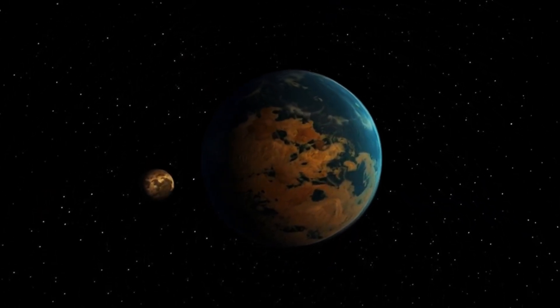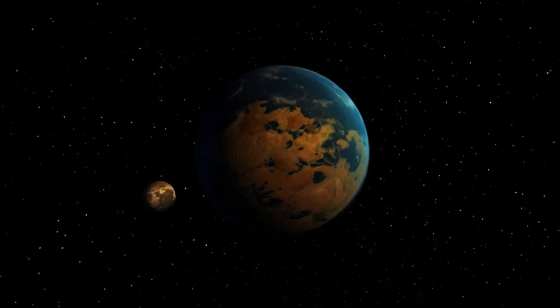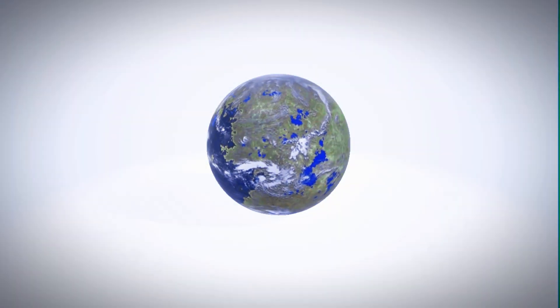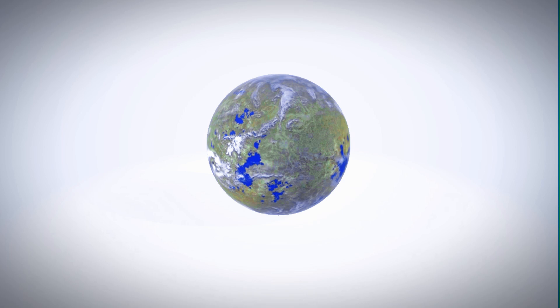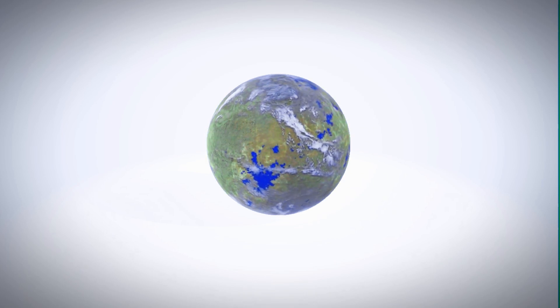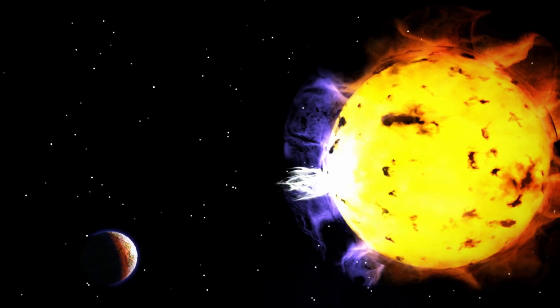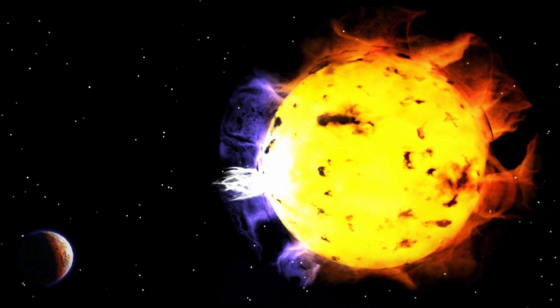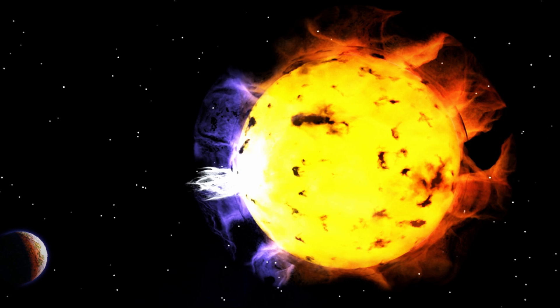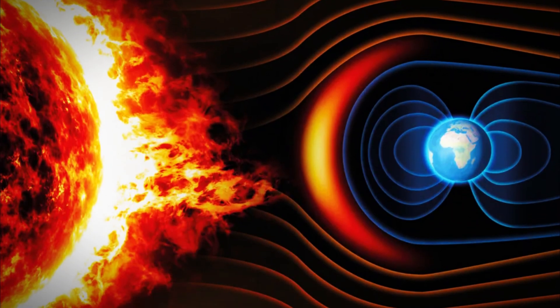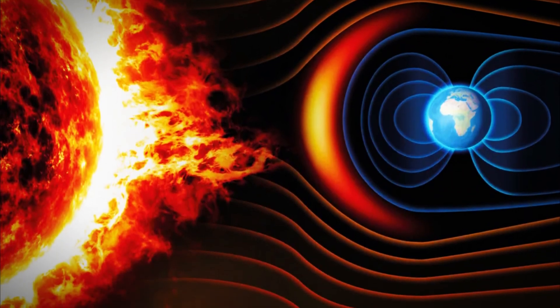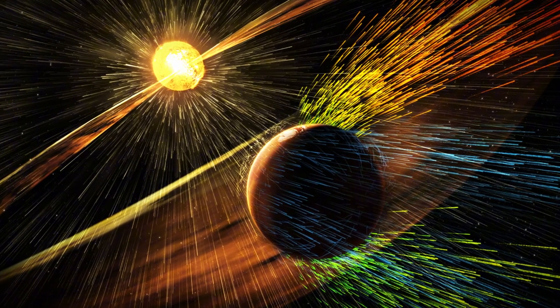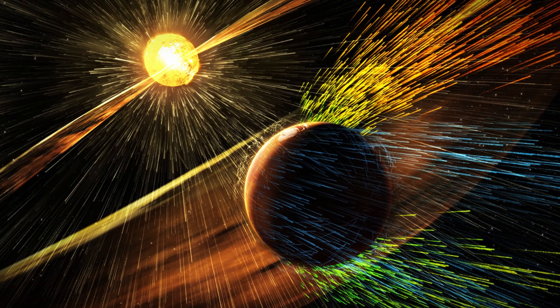Although Proxima b is relatively small, planets within its habitable zone face extreme challenges due to the intense magnetic fields generated by its parent star. These powerful magnetic forces create high-energy radiation and frequent particle bursts. Solar flares from Proxima Centauri are particularly dangerous and could obliterate any chance of life developing on Proxima b.